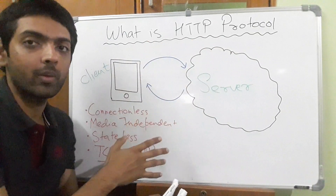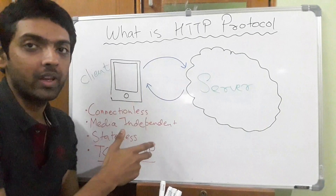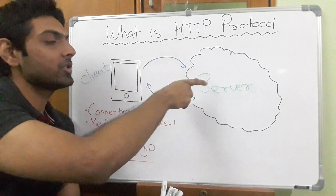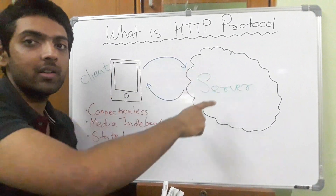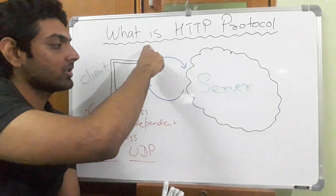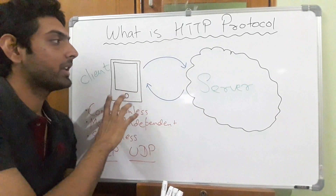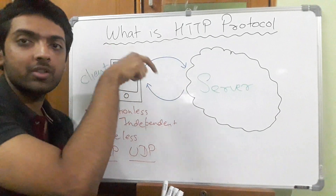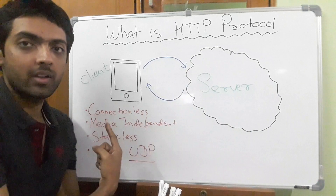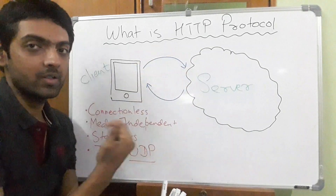No one is really expecting anything from each other, but they are still able to communicate. After the transmission and reception has happened, the connection has been closed. Now you have to reestablish the connection if you want something else from the server. So this becomes a stateless protocol.